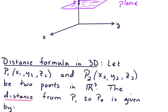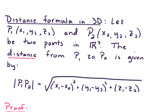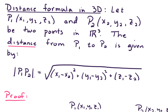The last thing I want to talk about here is the distance formula in 3D. The distance formula says: let P1 and P2 be two points in R3. We describe point P1 by its coordinates (x1, y1, z1) and P2 by its coordinates (x2, y2, z2). The distance from P1 to P2 is given by the square root of (x1 minus x2) squared plus (y1 minus y2) squared plus (z1 minus z2) squared.